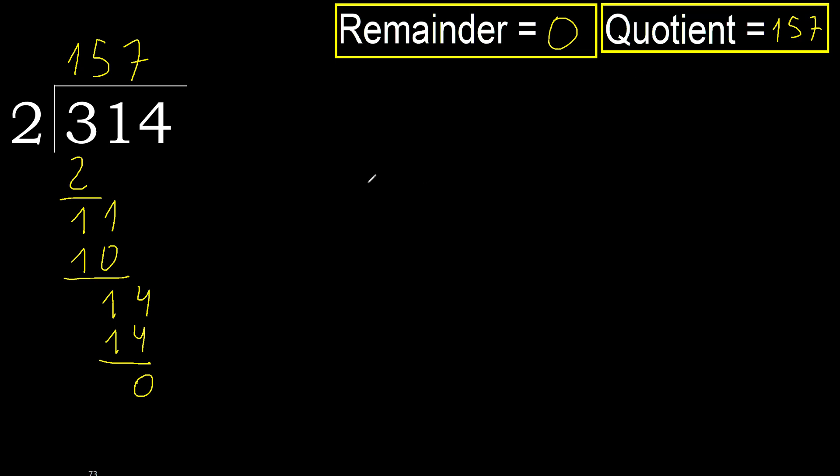Subtract. Next. 314 divided by 2 is 157. Ok, subtract. Next: 19, 158. Subtract. Next: 168. Thank you.